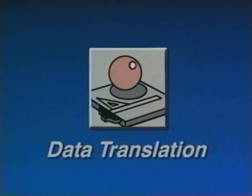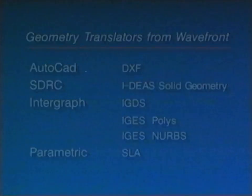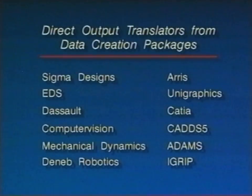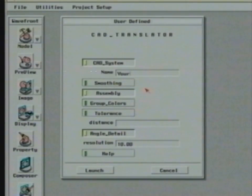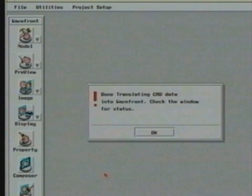The first step is data translation. Translators convert CAD geometry to the Wavefront file format. Wavefront provides translators for a number of popular CAD systems, as well as translators for finite element analysis packages. Third parties provide many more — these vendors include in their systems the ability to save files in the Wavefront format. Menus simplify the act of selecting data for translation. The interface presents a variety of options, such as controlling the degree of faceting for the imported model, or extracting only a specified layer from a complex assembly.